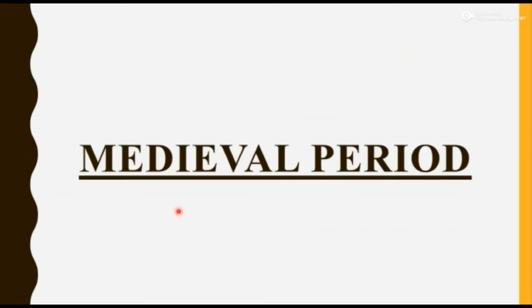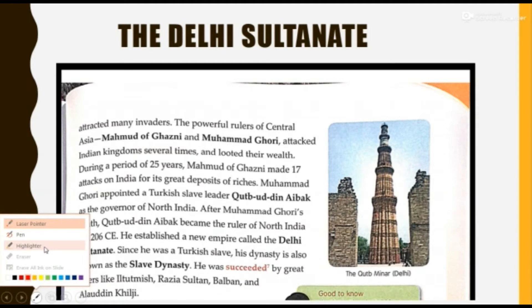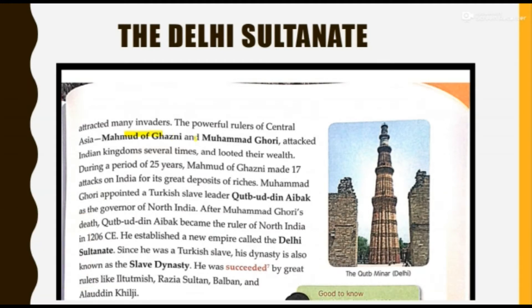Now we are talking about the Medieval period. Mohammed Ghazni attacked the Indian kingdom many times — purely for its wealth and riches. During a period of 25 years, he attacked India 17 times, motivated entirely by the deposits of wealth in the Indian kingdoms.